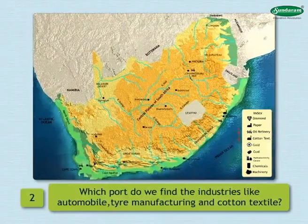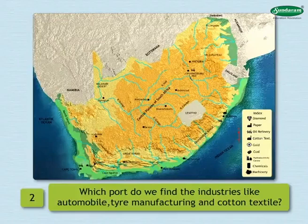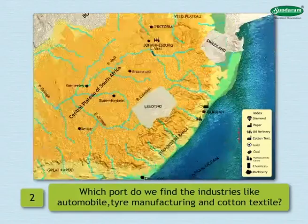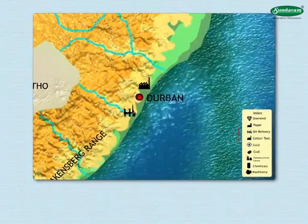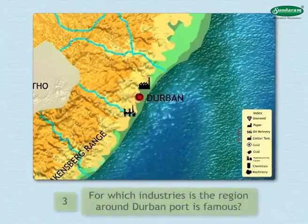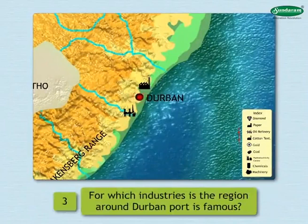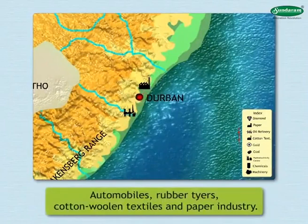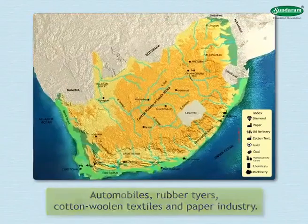2. Near which port do we find the automobile, tire manufacturing, and cotton textile industries? Near Port Durban, we find industries like automobile, tire manufacturing, and cotton textile. 3. For which industries is the region around Durban port famous? For automobiles, rubber tires, cotton and woolen textiles, and paper industries.